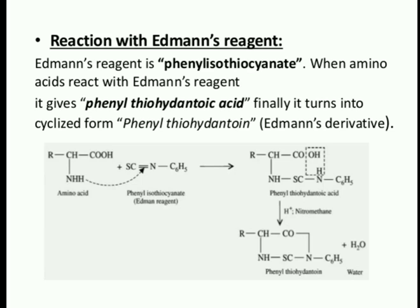The next reaction is with Edman's reagent. Edman's reagent is phenyl isothiocyanate. When an amino acid reacts with Edman's reagent, it gives phenylthiohydantoin acid, which finally converts into a cyclic form — phenylthiohydantoin — also known as the Edman derivative.